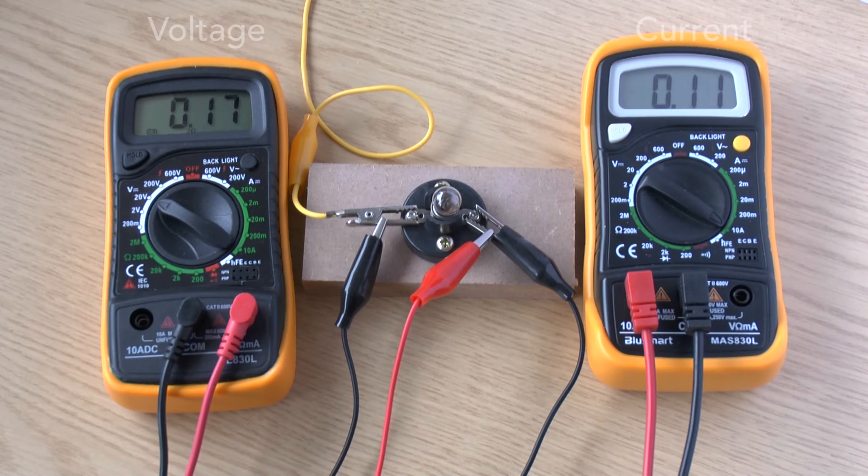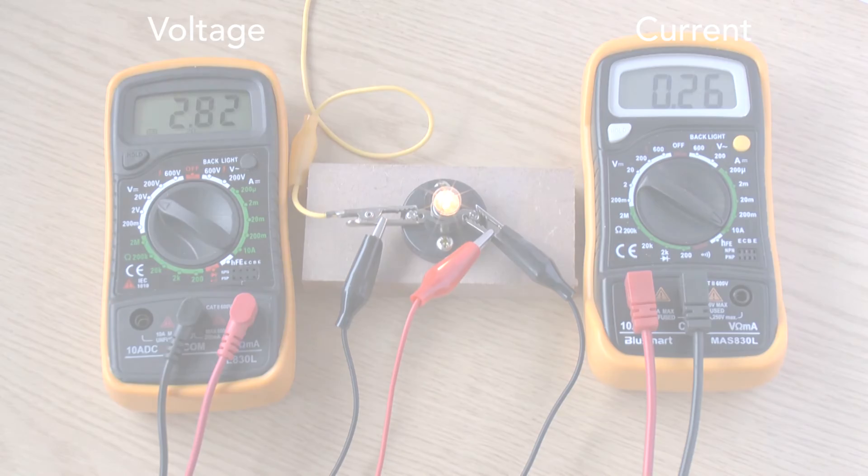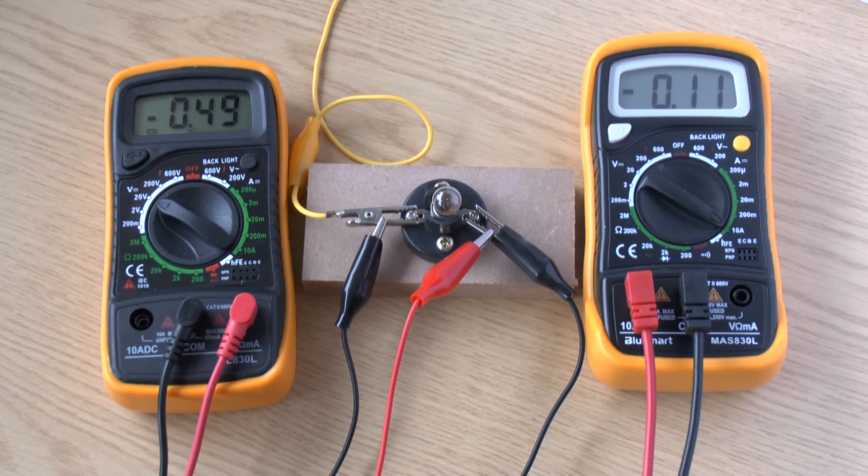Using two digital meters, one set for voltage and the other for current as before, we can take readings for the bulb at a number of voltages. We must do this for both positive and negative voltages to make sure that it has the same characteristic both ways around.